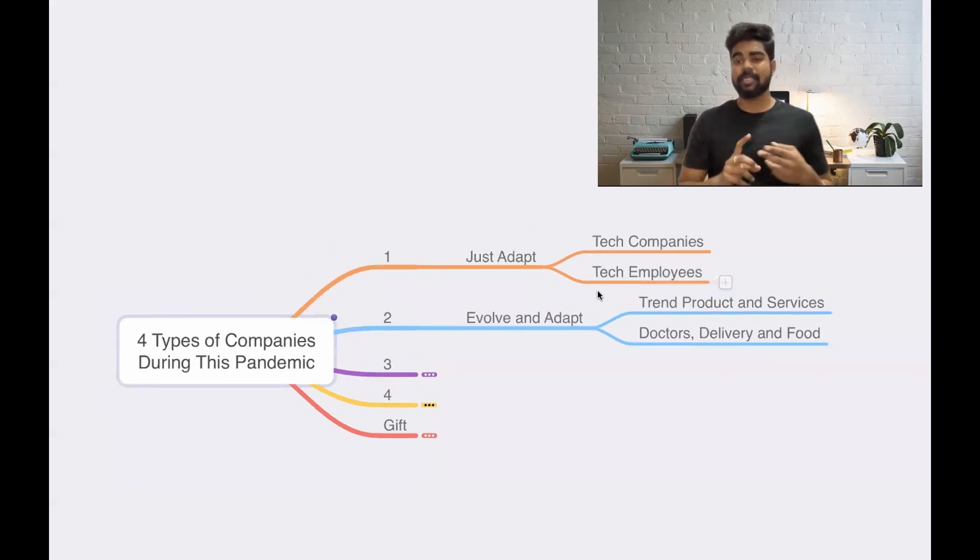For example, doctors, delivery people, food and groceries, these kinds of companies or business, they just need to evolve into something else and they need to adapt the situation because these are all something which is very essential. How did they evolve? Doctors also started working in WhatsApp.